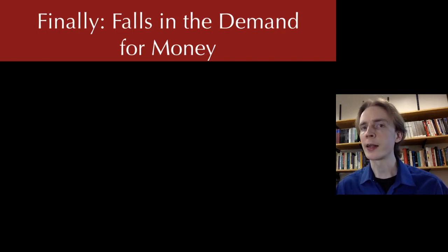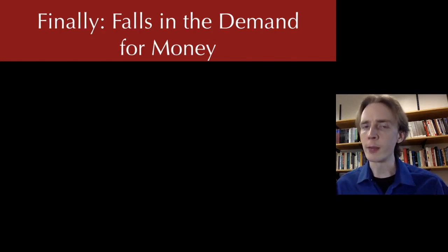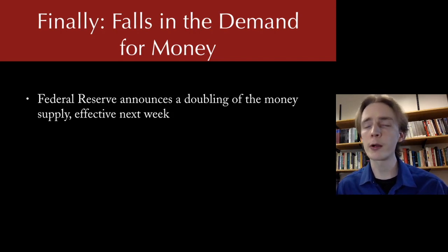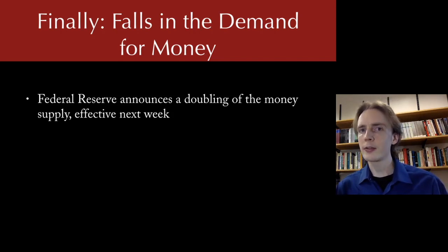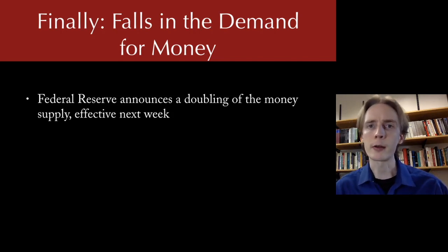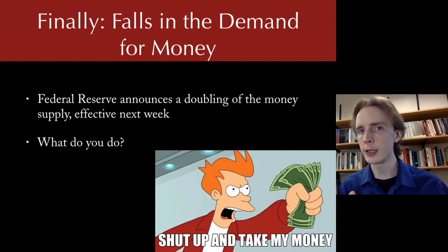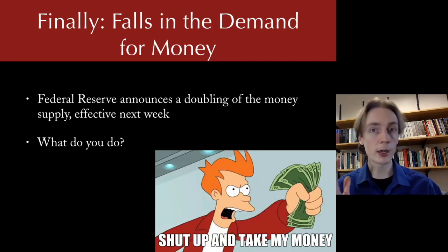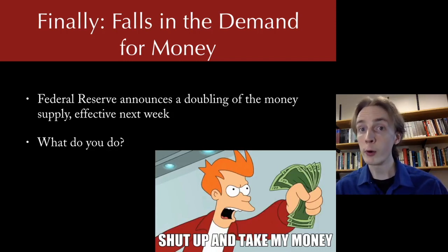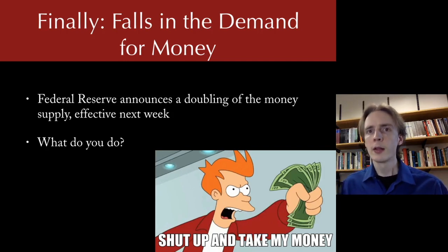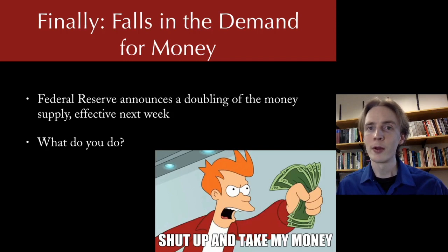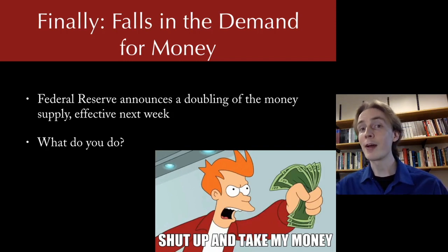That leaves us one more of our six reasons. When might the demand for money fall? Imagine you open the paper and the headline says the Federal Reserve is no longer independent and they're going to double the money supply next week. What would you do? You'd probably want to get out ahead of that. You know prices haven't risen yet, but you've taken macroeconomics, so you know prices are going to rise. You want to spend your money before prices rise, as quickly as possible. This is going to decrease your demand for money — you'd rather spend it than keep it, because all the money you keep is going to be less valuable after next week.